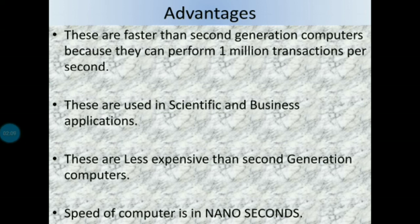The third generation computer speed was calculated in nanoseconds. First generation computers operated in milliseconds, second generation computers in microseconds, but third generation computers operated in nanoseconds.